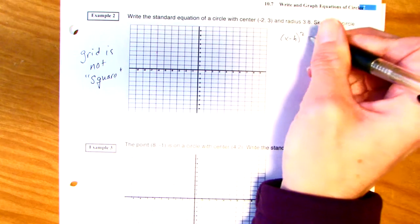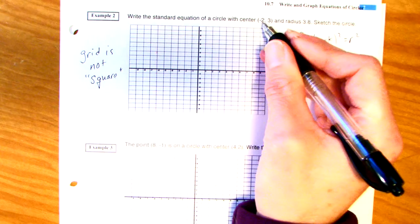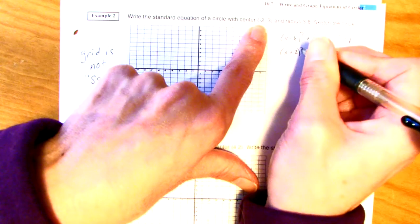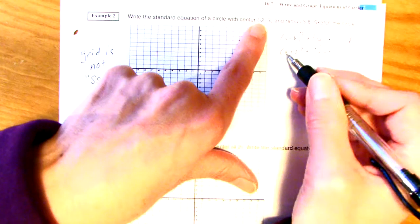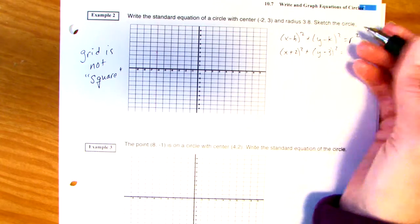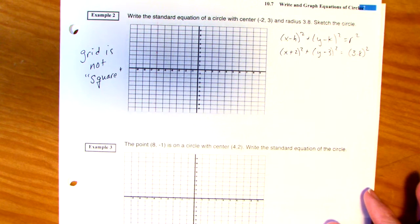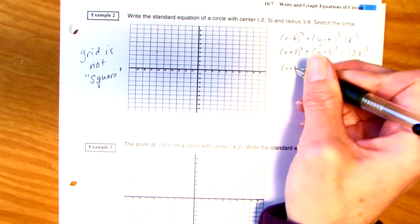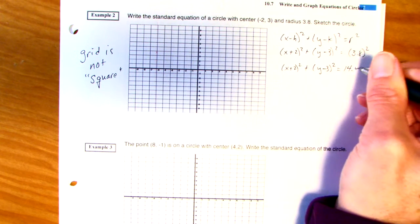Alright, so this is our center, remember? x minus h squared plus y minus k squared is equal to r squared. So, the center is negative 2, 3. So, watch this. It's going to be x plus 2 squared plus y minus 3 squared. Notice that sign change, okay? Is equal to, the radius is 3.8. So, 3.8 squared. You could leave it like this. I'm just going to change it. x plus 2 squared plus y minus 3 squared is equal to about 14.44.